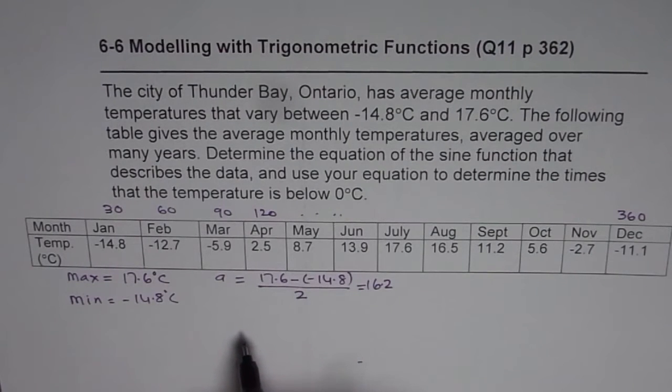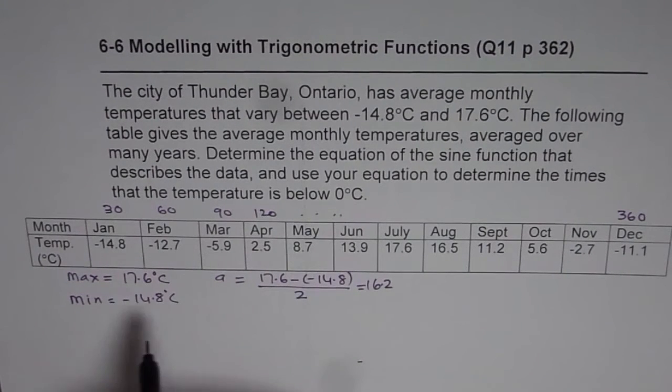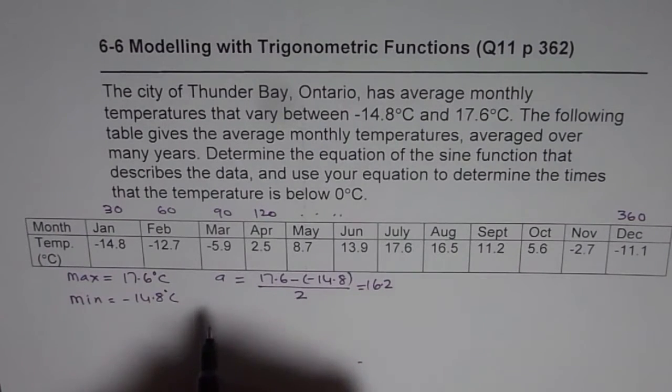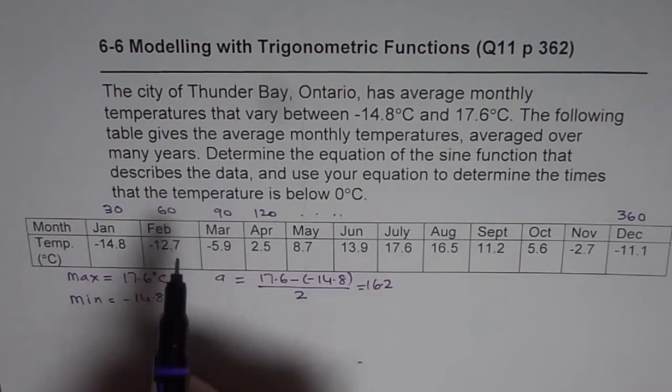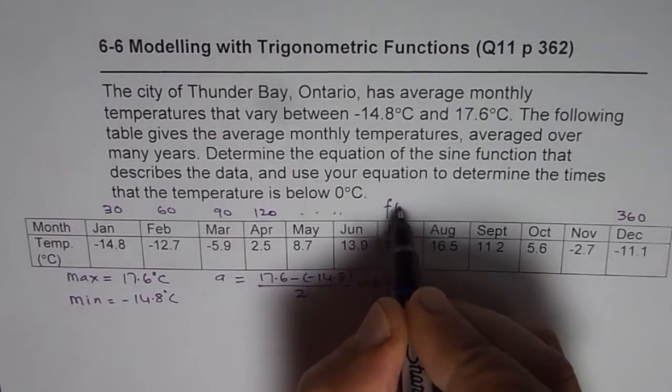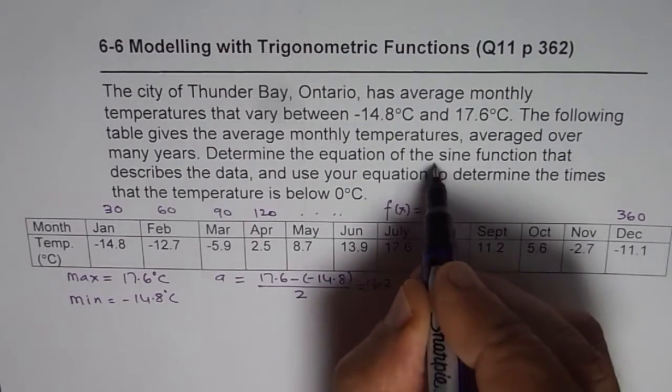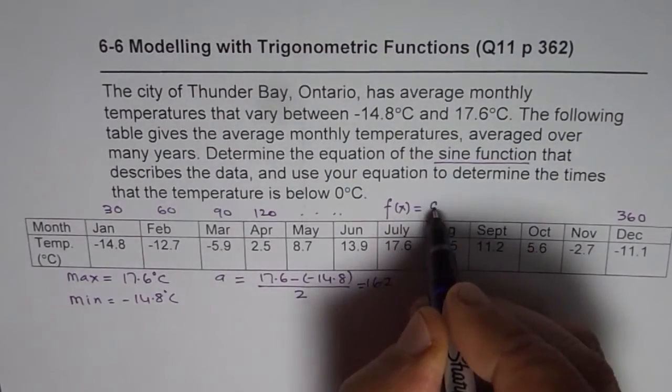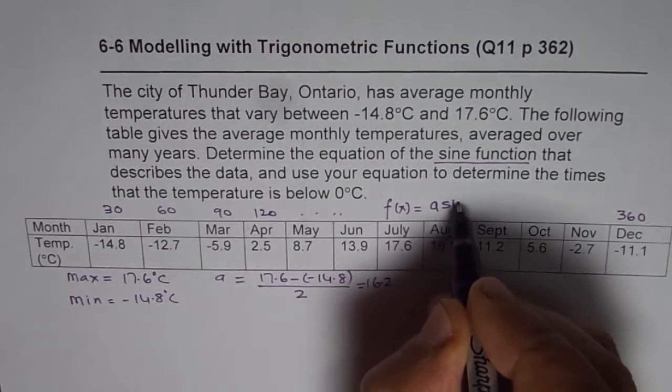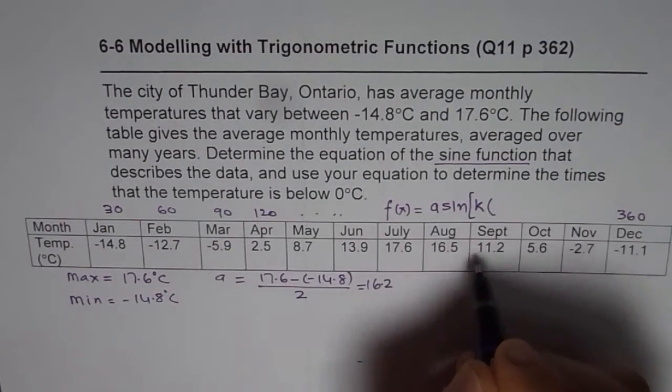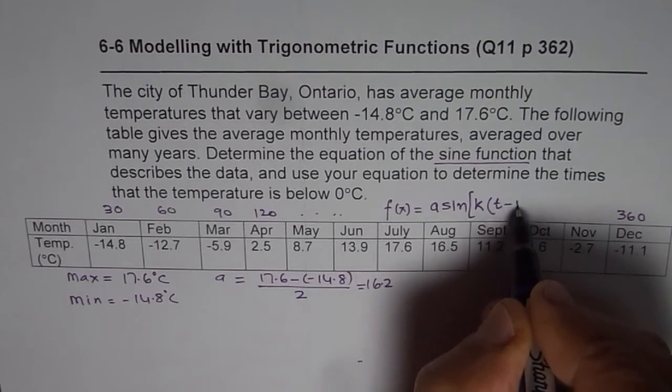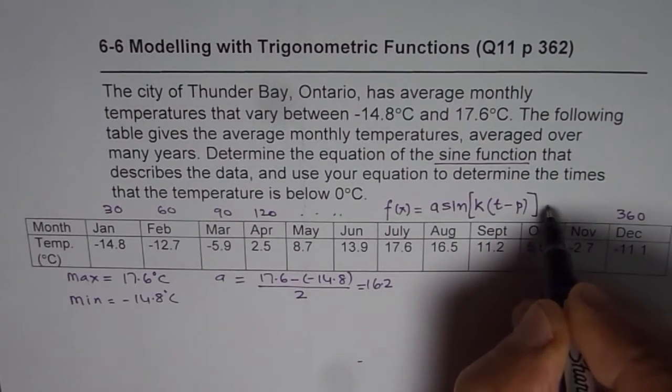Now, horizontal translation is the average value of these 2. So let me first write down the equation which I want to write for this function, which is f(x) equals to, you need a sine function, correct? So we say a times sine, within brackets, k, now time, let's write t, minus p, the phase shift, plus q.